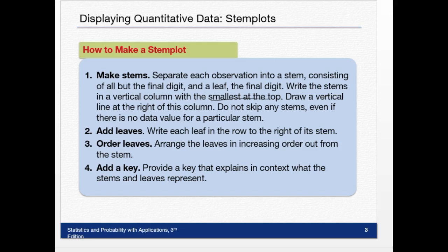Then you add the leaves. Write each leaf in the row to the right of its stem, then arrange the leaves in increasing order out from the stem. Lastly, and most importantly, you have to add a key that provides context and explains what the stems and leaves represent.